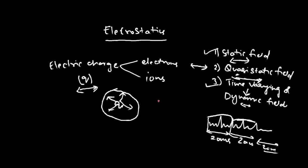Now let us start understanding the properties of static field. As mentioned, static electric field is produced by electric charges which are at rest. So electrostatics is defined as the study of the field produced by static electric charges, or the study of the field produced by electric charges at rest. The kind of electric charge we are going to consider is electric charge Q.